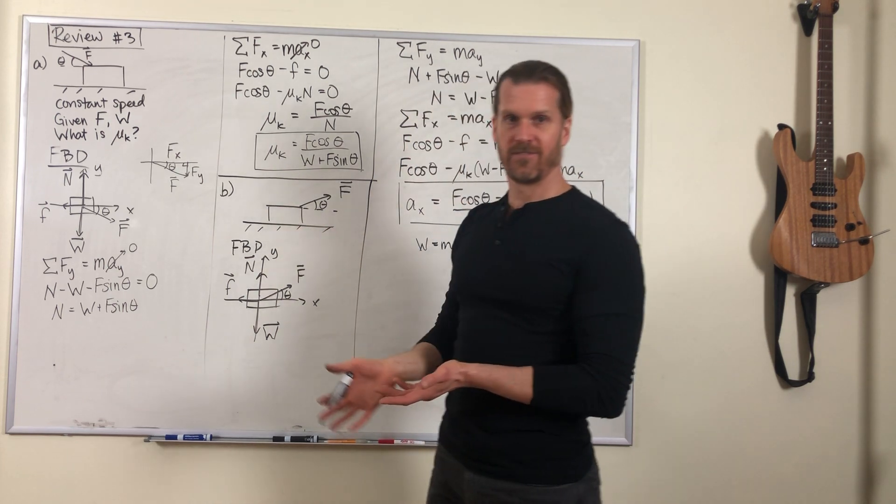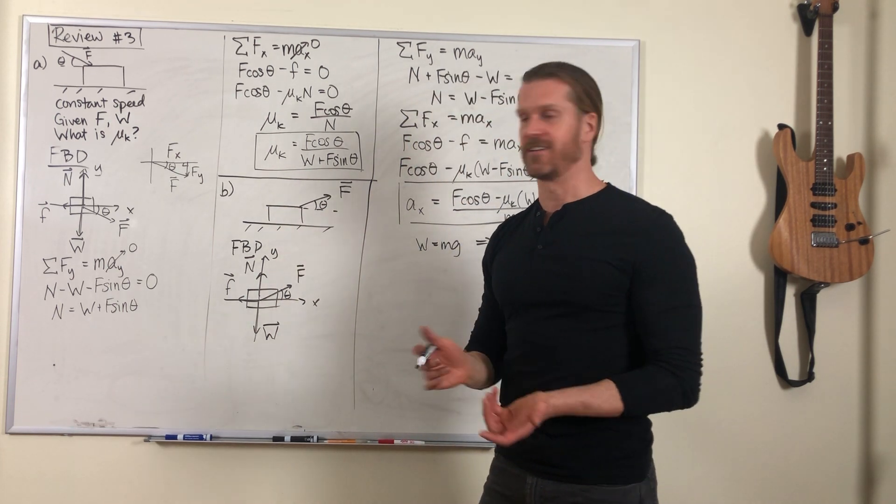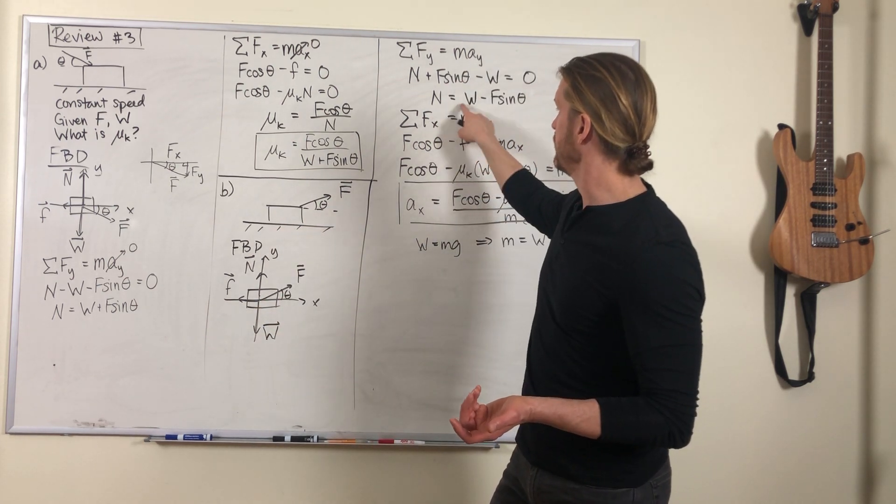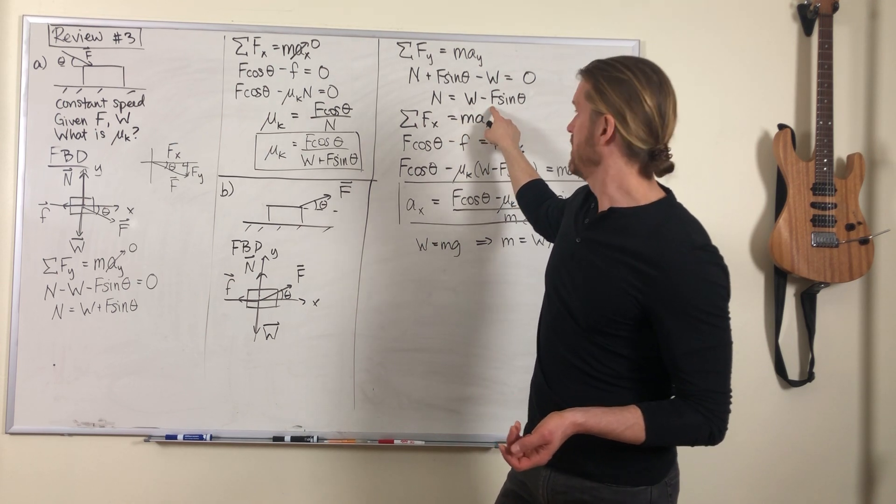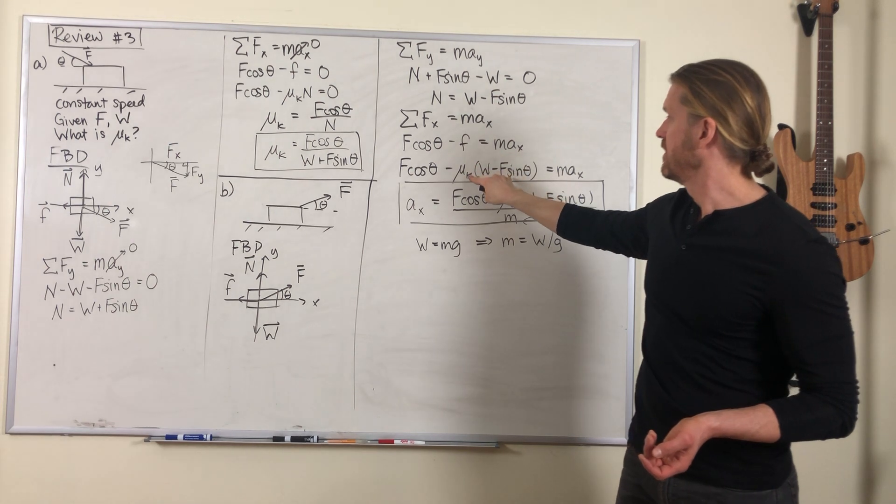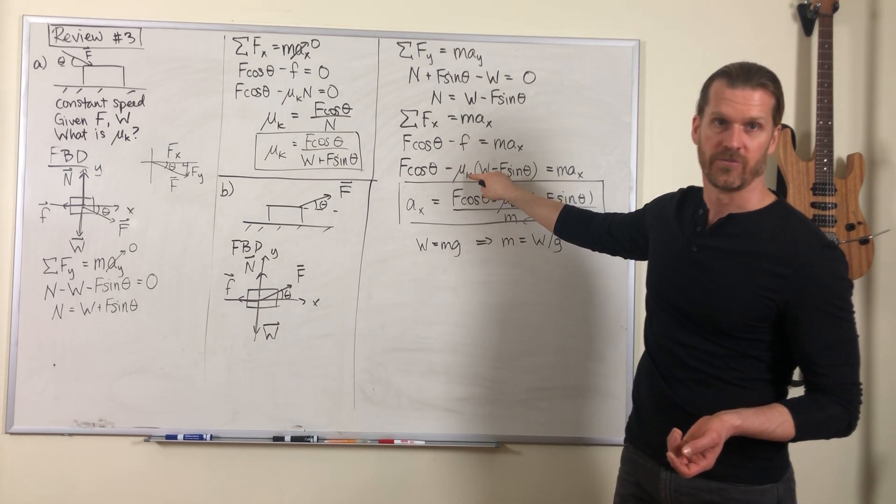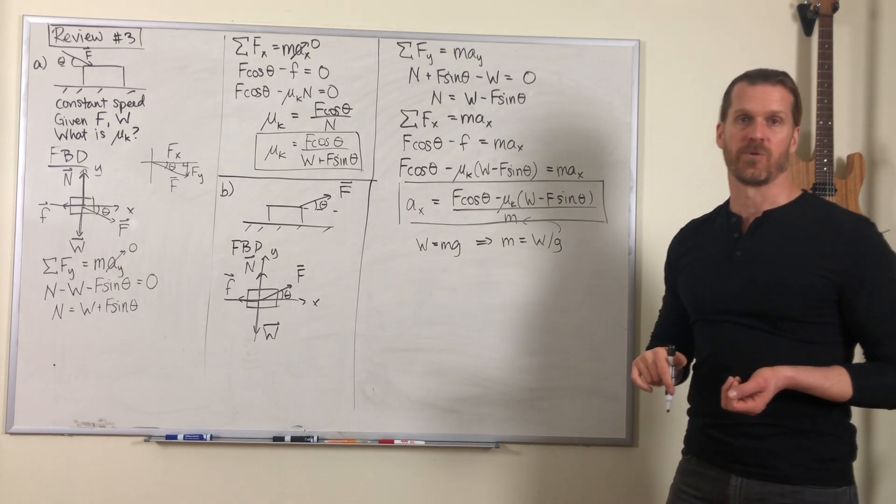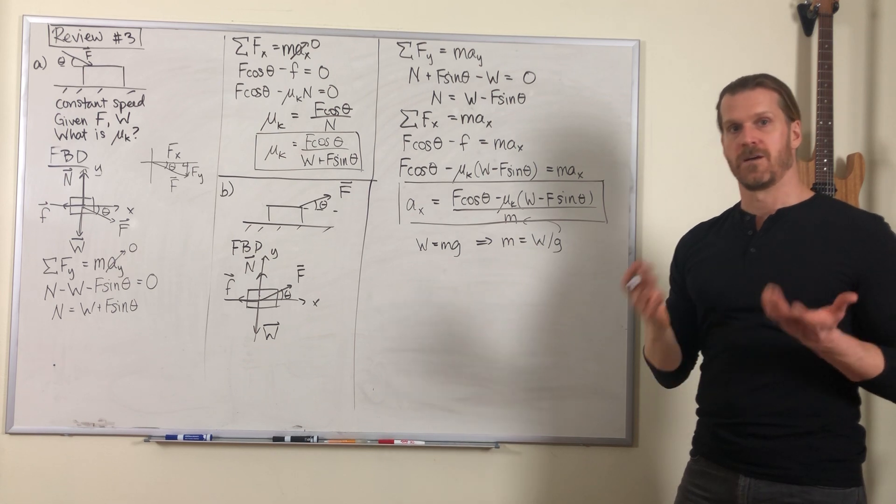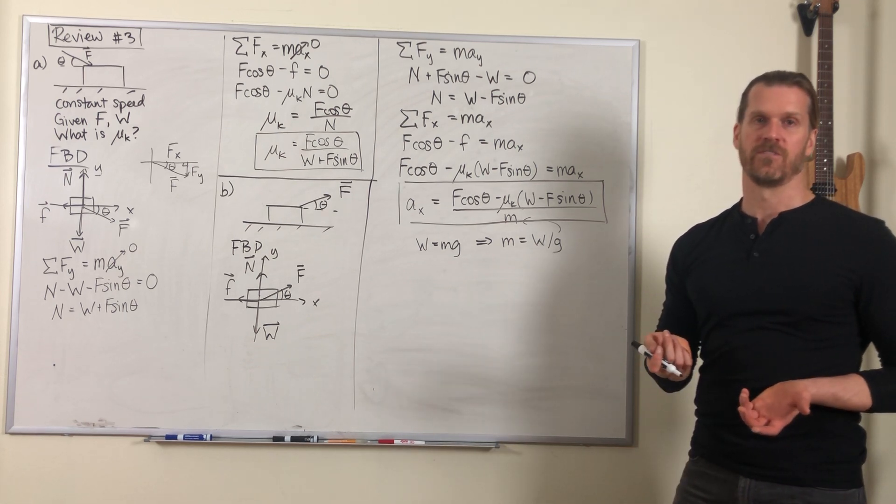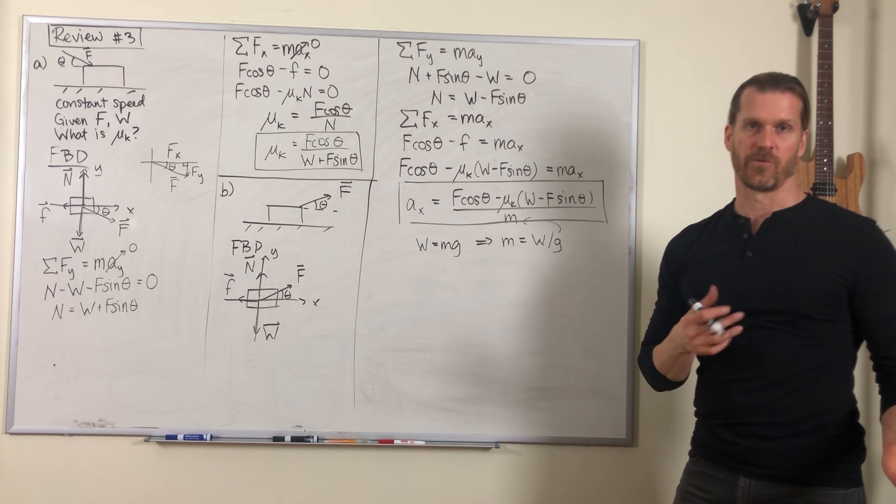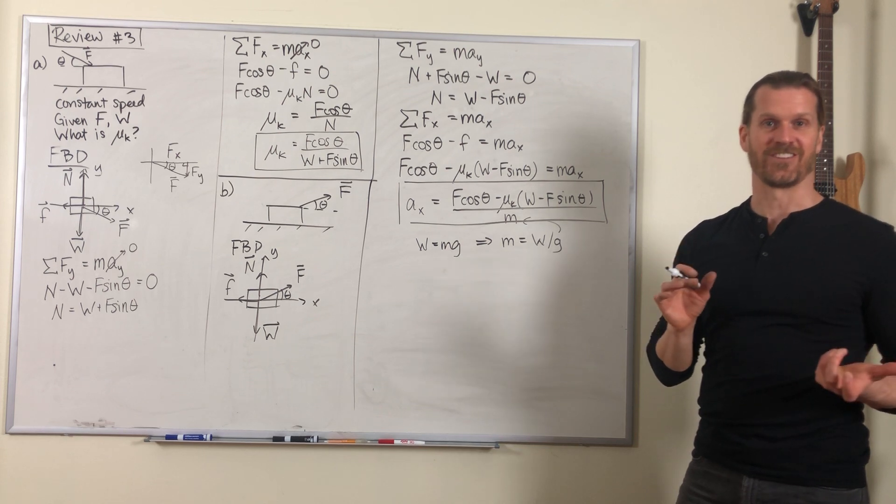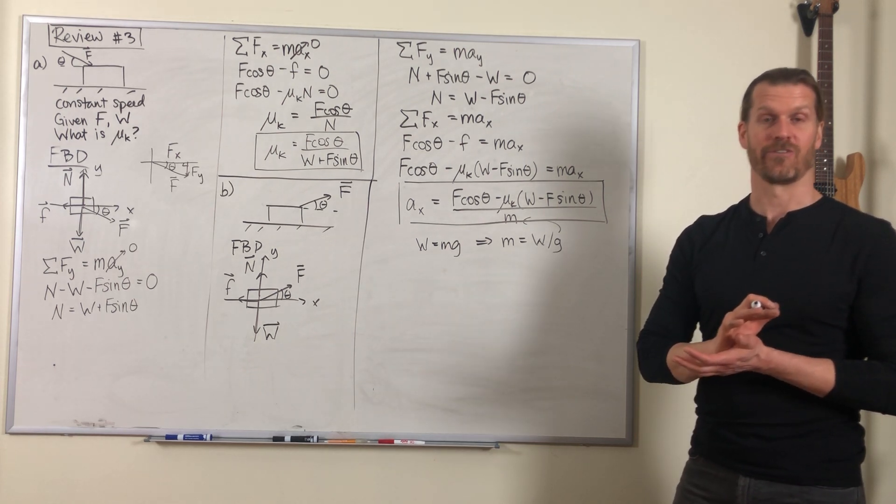In part b, we lifted up the box slightly, not enough to make it lose contact with the ground, but enough that we were able to reduce the amount of normal force. And when that normal force gets reduced, then the friction force gets reduced, which meant that we were able to have some acceleration in part b. So I might ask you to explain this concept of friction force depending on the normal force. Surfaces stick together more when they're pushed together harder.